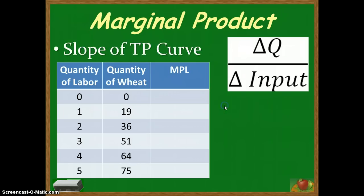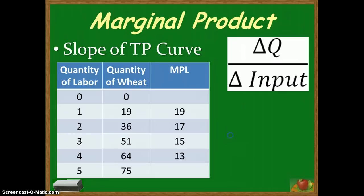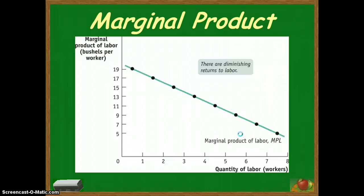If we look at George and Martha's farm, the marginal product of labor for the first worker is 19 bushels of wheat. For the second worker, we produced 36 total bushels, which is an increase of 17. For the third worker, we go from 36 to 51 bushels, so the marginal product of labor is 15. For the fourth worker it's 13, and the fifth worker is 11. We could then graph out the marginal product on its own graph, and it would look like this.